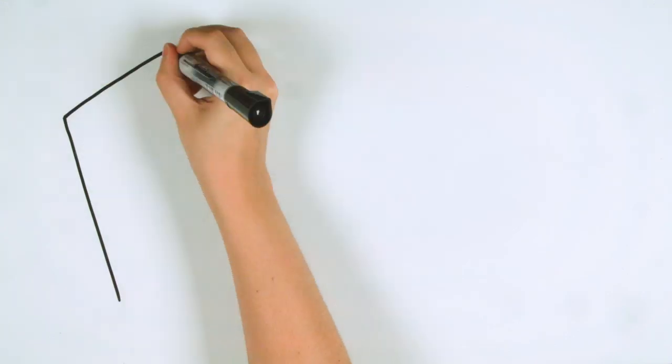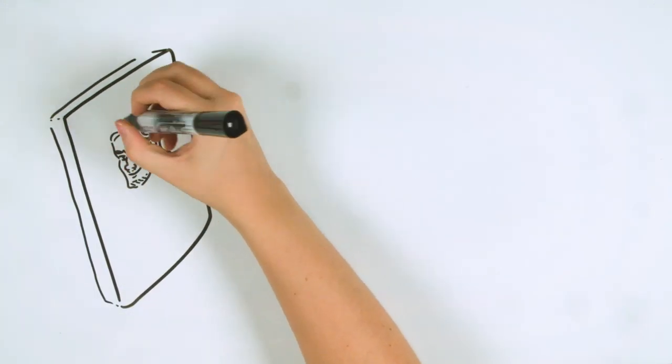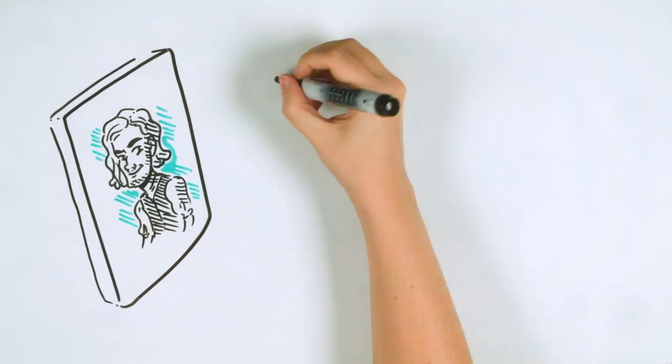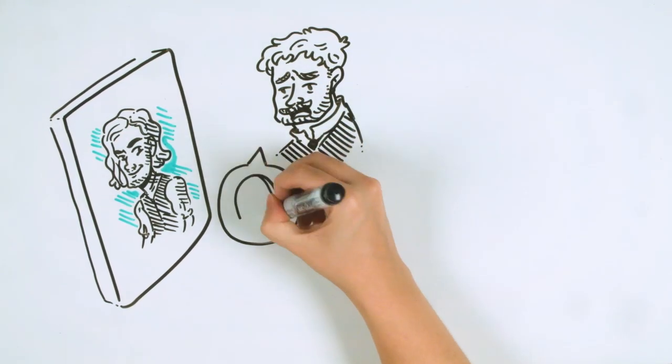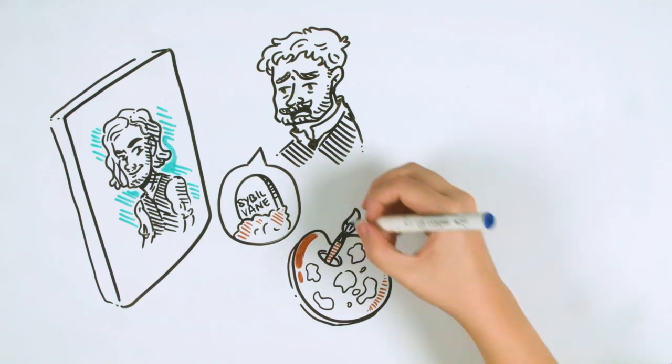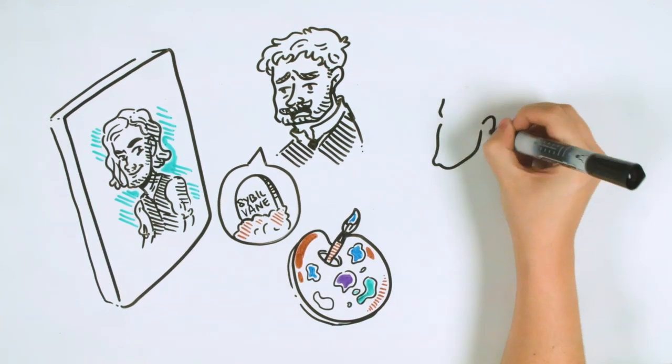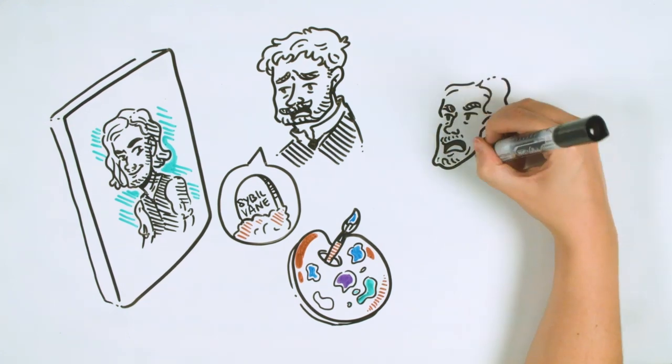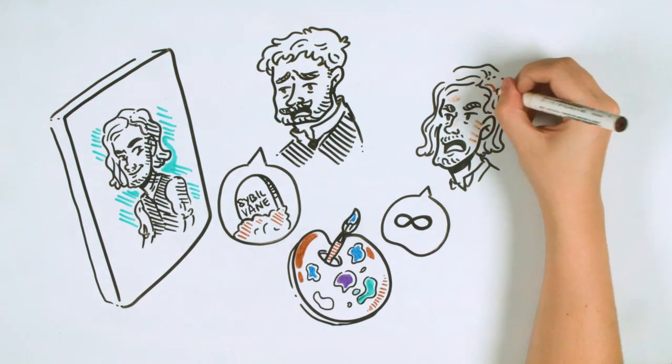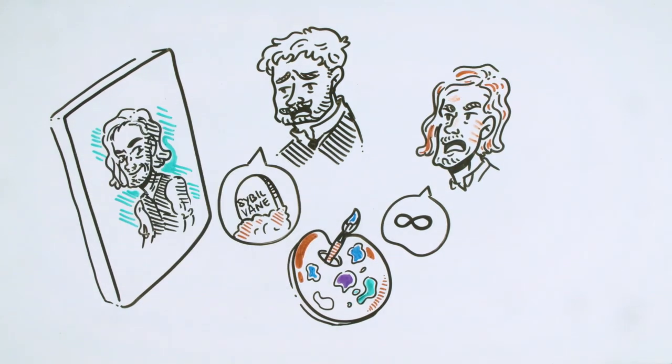At home, Dorian sees that Basil's portrait of him has changed. The other figure in the painting seems to smile, as if mocking him. Next morning, Lord Henry tells him that Sybil has committed suicide and suggests he see her suicide as an artistic representation of eternal love. Dorian takes it as an important moment in his life and undertakes to lead a life of eternal youth and infinite pleasure. The portrait will be the one to bear the marks of old age instead of his own body.